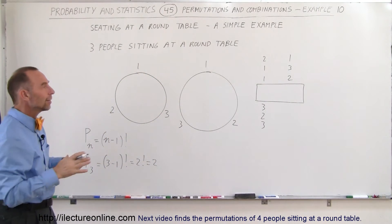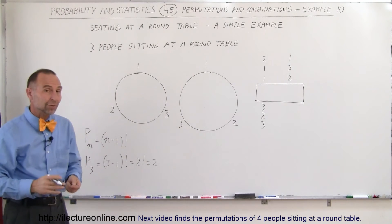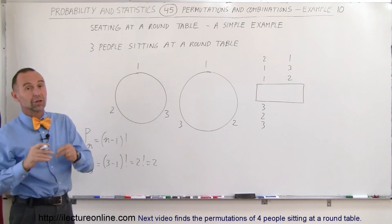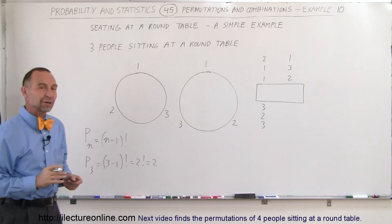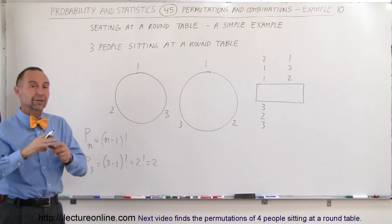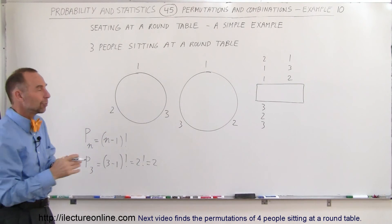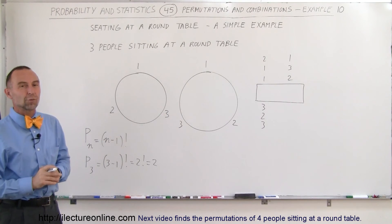Once you see that, we can then start looking at more complicated cases where people have to sit around roundtables with special conditions. For example, 2 people must sit together, or 2 people cannot sit together, and we have some examples coming up where we can show you how you then calculate the number of permutations that you can have with a certain number of people sitting around roundtables with special conditions as well.